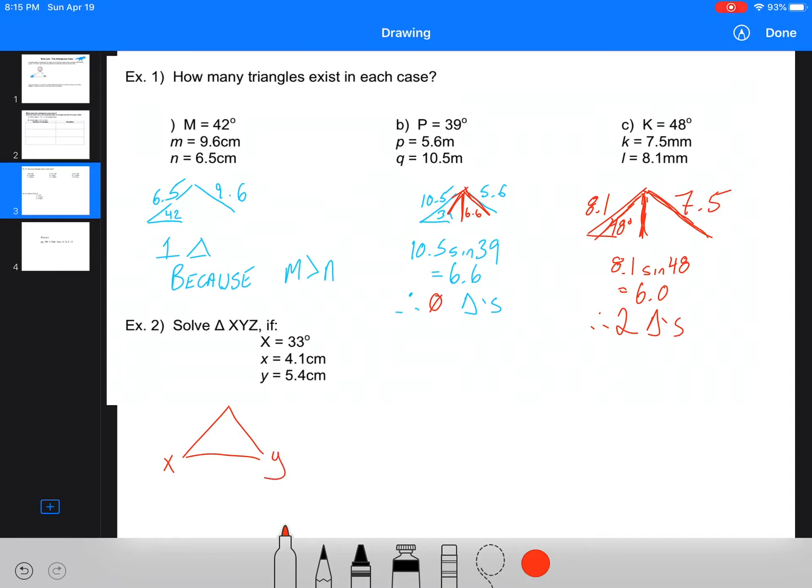Last one. We need to solve this triangle. So now we've got X, Y is going to be over here and Z. So 33 degrees, 4.1, 5.4. Now really quickly, I would just do 5.4 sine 33 equals because I want to establish if there are two cases or not. This is an ambiguous case note. So good chance there is. This is 2.9. 4.1 is greater than 2.9. So we're good to go. So therefore, two cases.